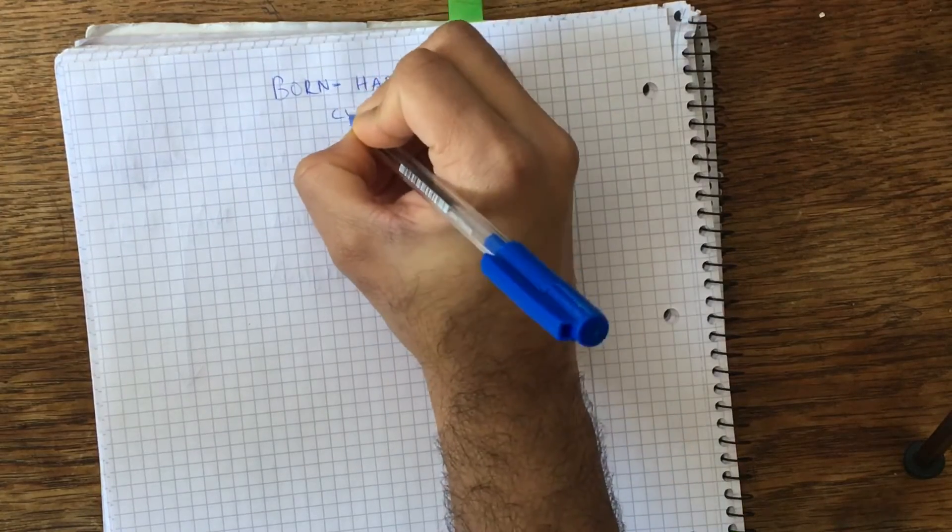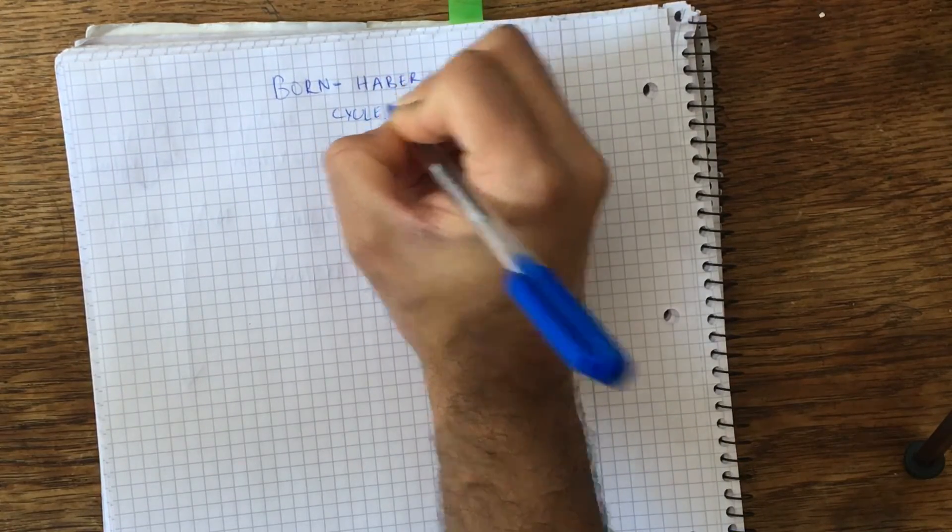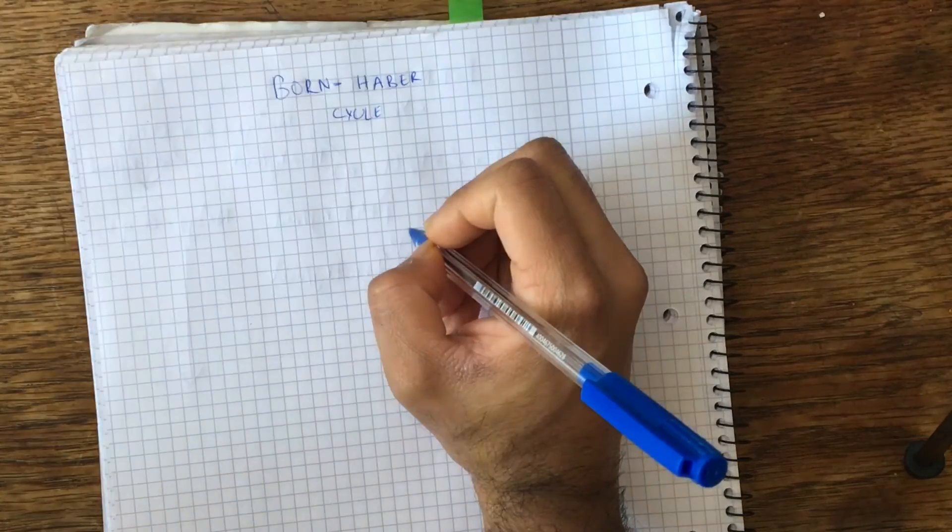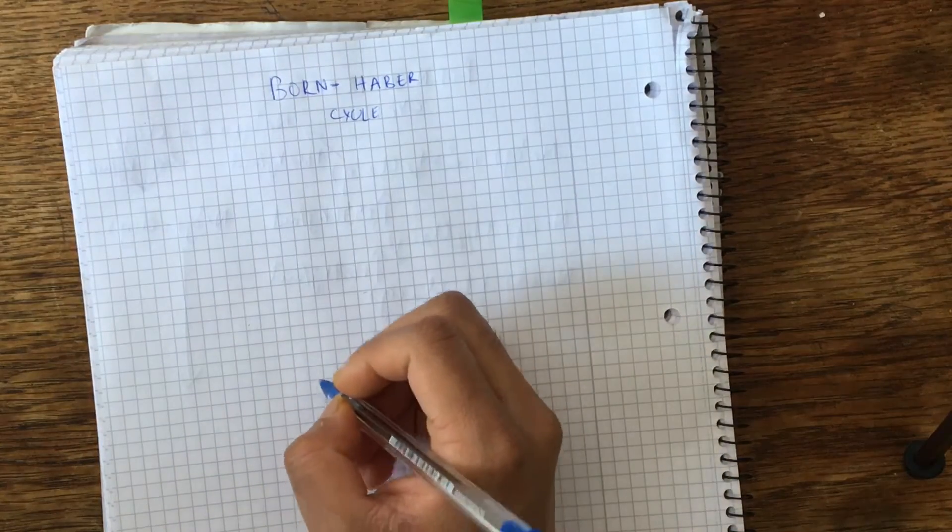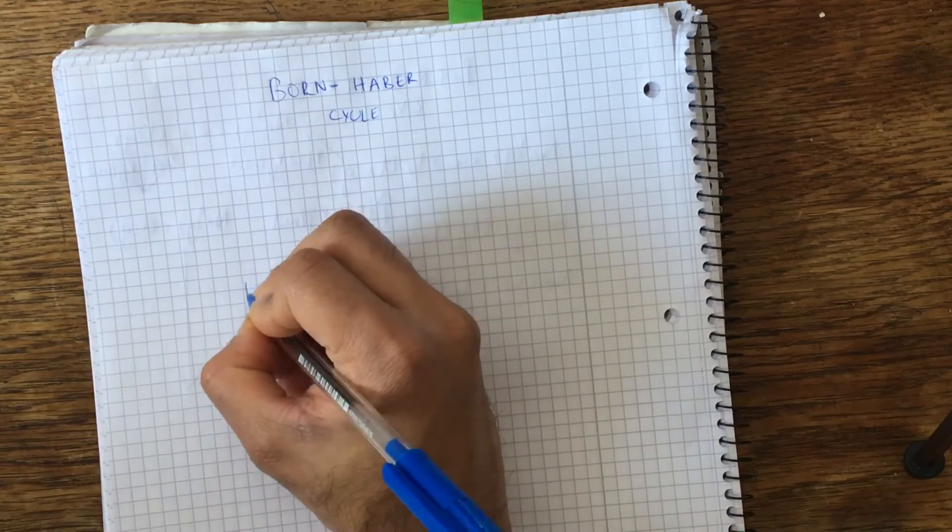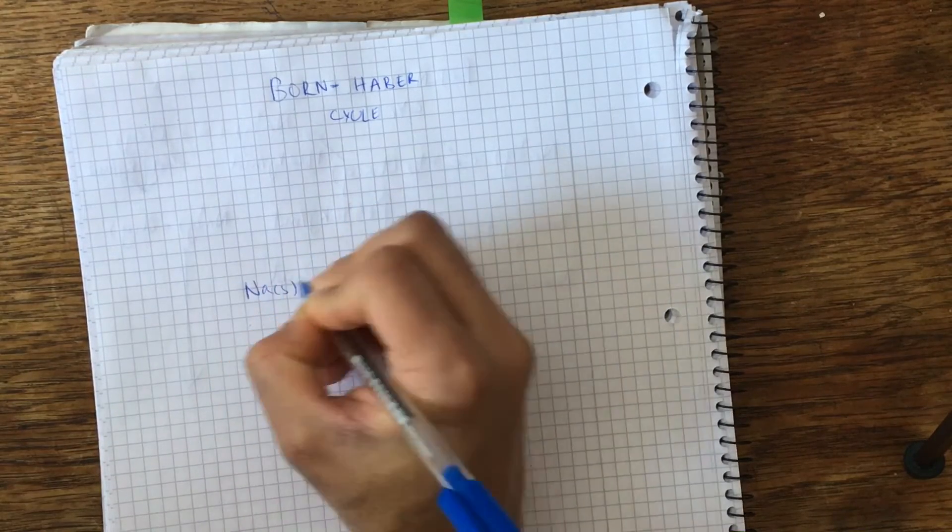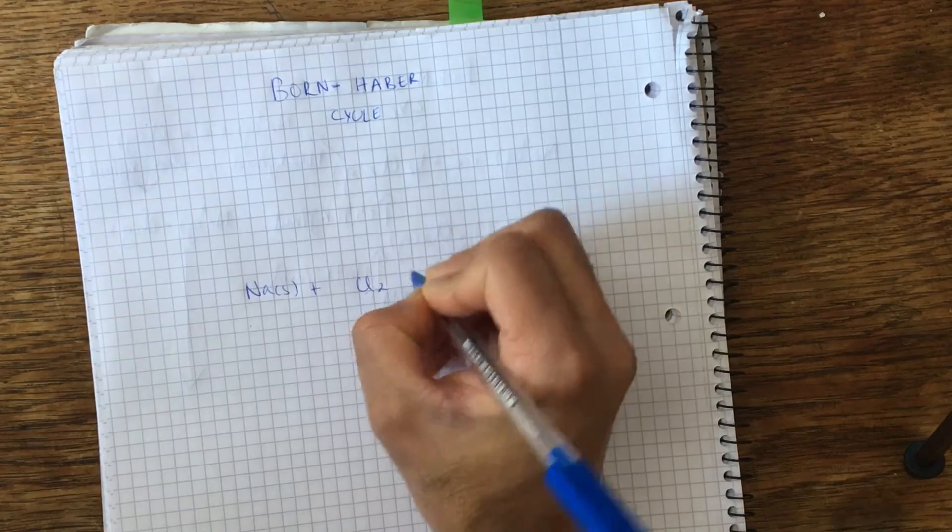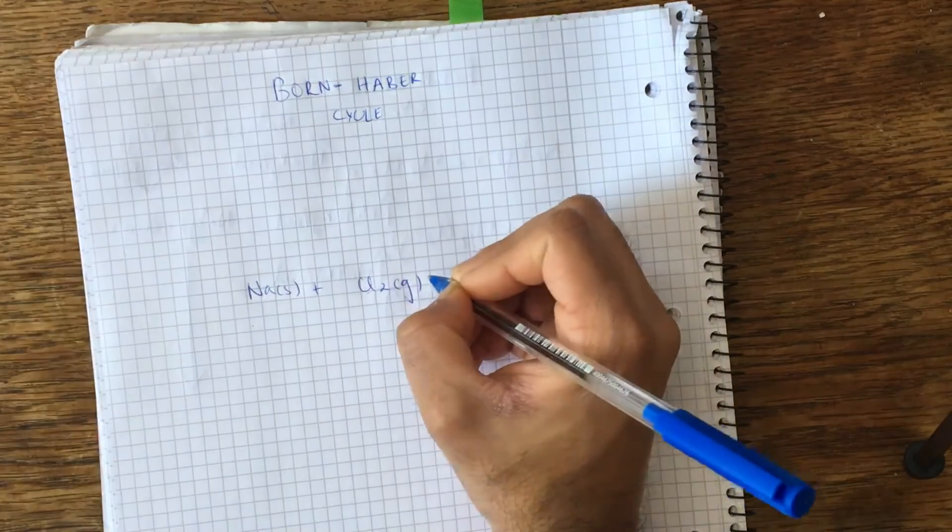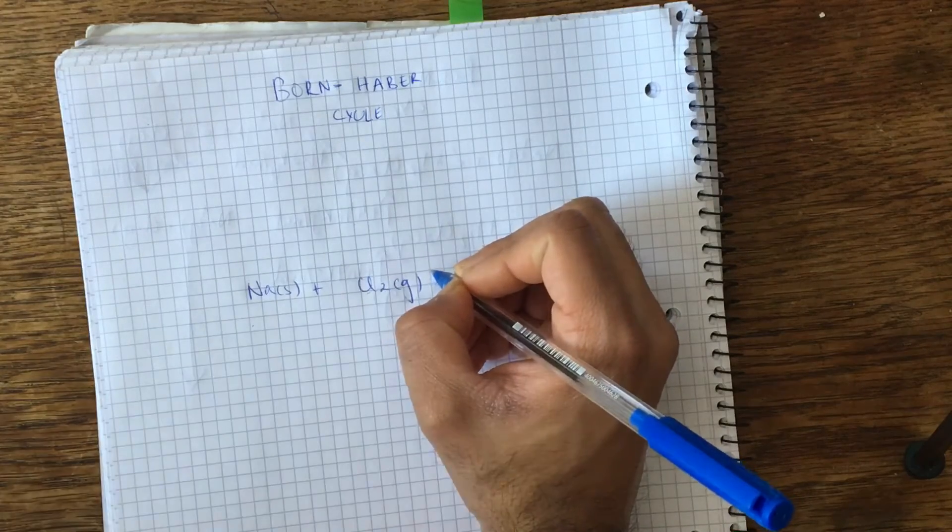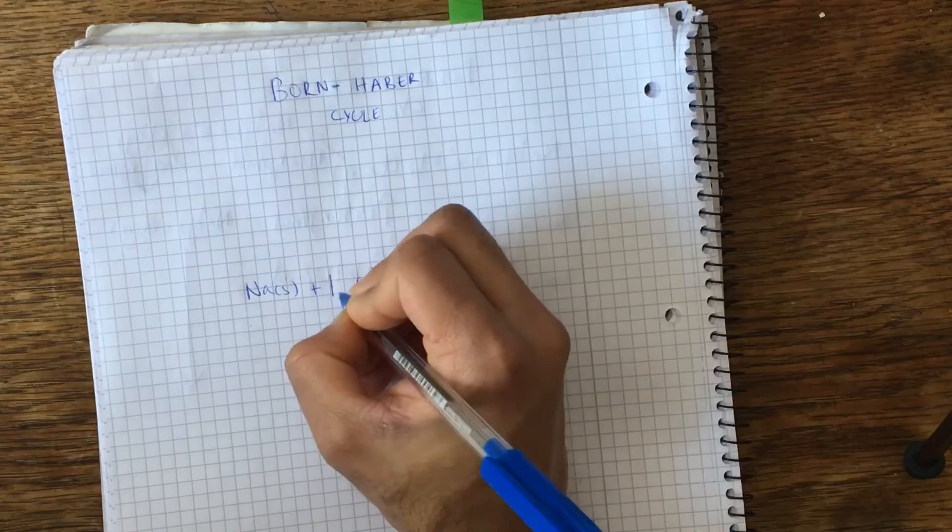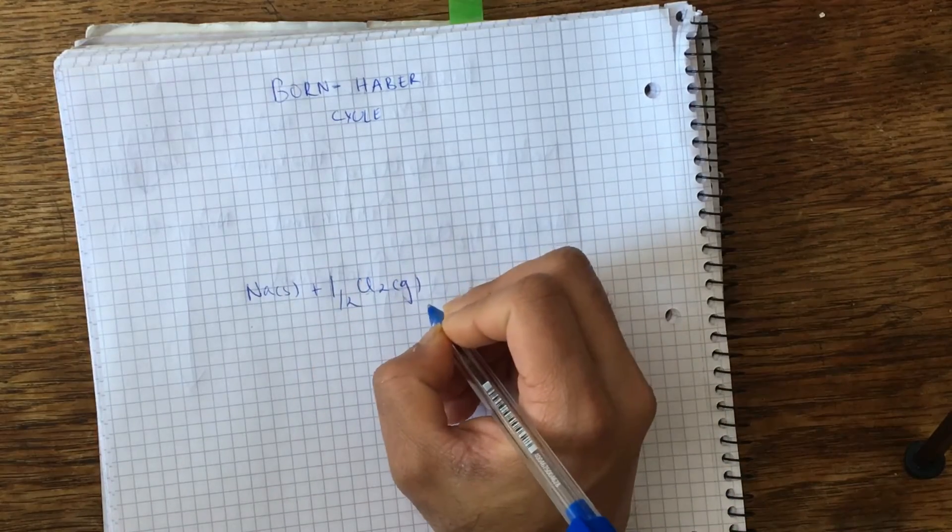We're going to use this to find out the lattice formation enthalpy of sodium chloride. So let's get straight to it. We basically have sodium and chloride in their standard states. Notice that because we only need one mole of both elements to form a sodium chloride crystal, we're just going to have half Cl2 gas here.